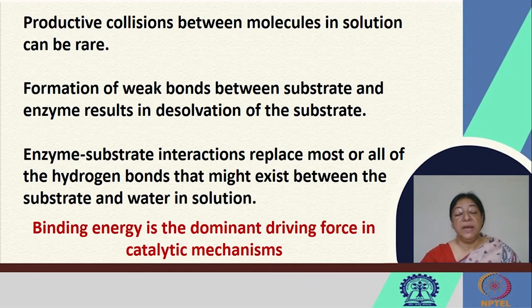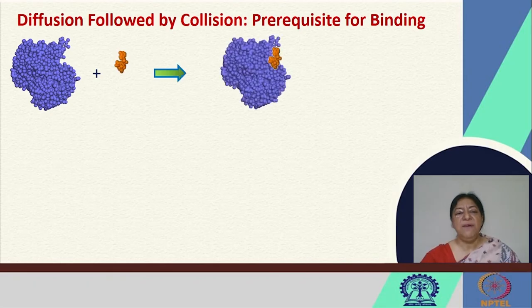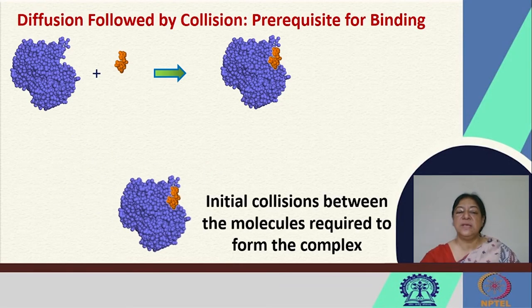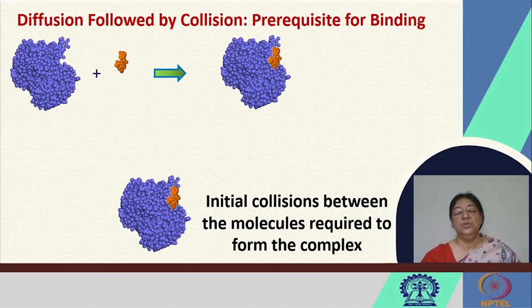The binding energy is the dominant driving force in the catalytic mechanisms. Looking at diffusion followed by collision — which is a prerequisite for binding — the specific enzyme and substrate come together through an initial collision in the proper orientation required for the molecules to form the complex, then have a catalytic reaction and release the product. Many factors are involved, and specific proximity and proper orientation are required in the recognition to form the complex.